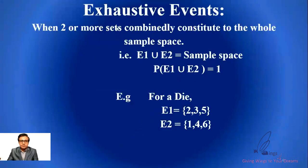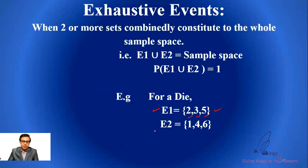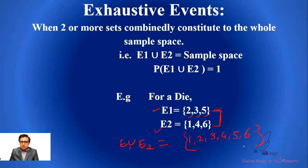Next: exhaustive events. Event one is the chance of getting 2 or 3 or 5. Event two is getting 1 or 4 or 6. If I combine E1 union E2, I get 1, 2, 3, 4, 5, and 6 — all possible events. Is there anything else possible apart from this? No — only six possibilities exist, and all of them are already covered.